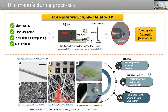Using this advanced manufacturing process, it's possible to form particles, fibers, and to print small features. All these structures can be employed in different fields. For example, in energy they can be used to produce sensors; in the environment, to produce membranes for water treatment; and the membranes can also be used for tissue engineering.